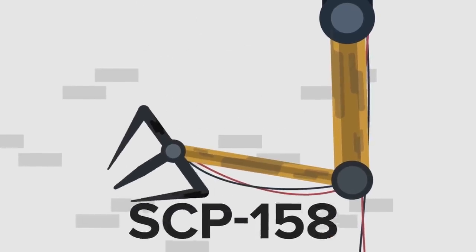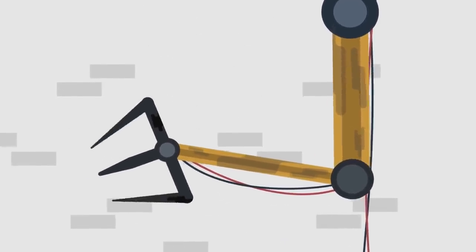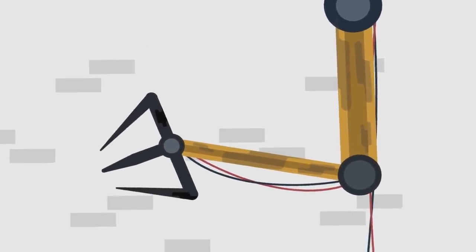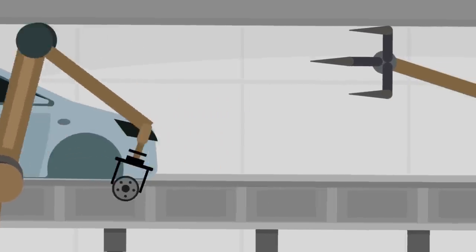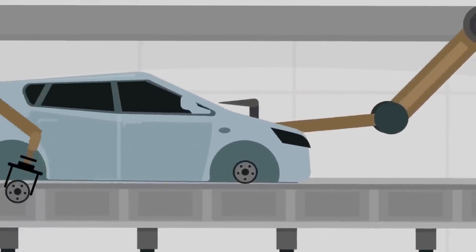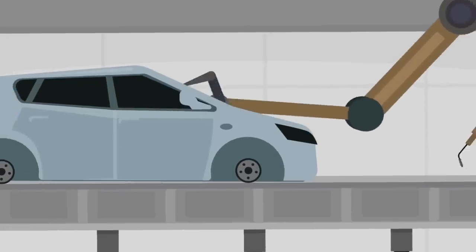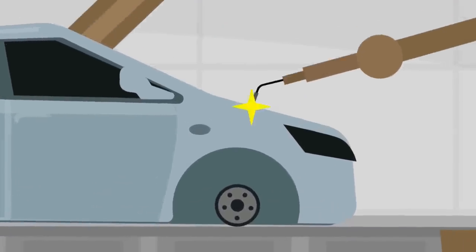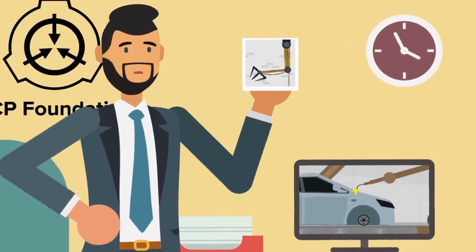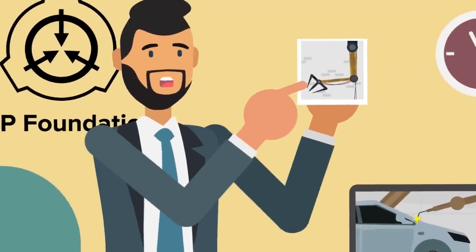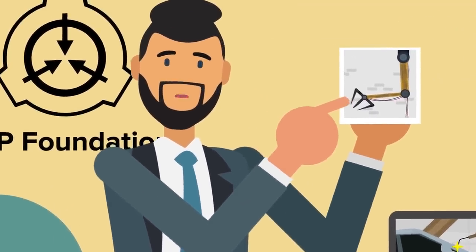At first glance, SCP-158 appears to be a device resembling a mechanical arm. In fact, it's a lot like the kind of machine you might expect to find inside a huge factory, standing as part of an assembly line, welding and drilling components together day in and day out. This particular mechanized arm, however, features a number of unique and bizarre differences from any currently used in automated production.